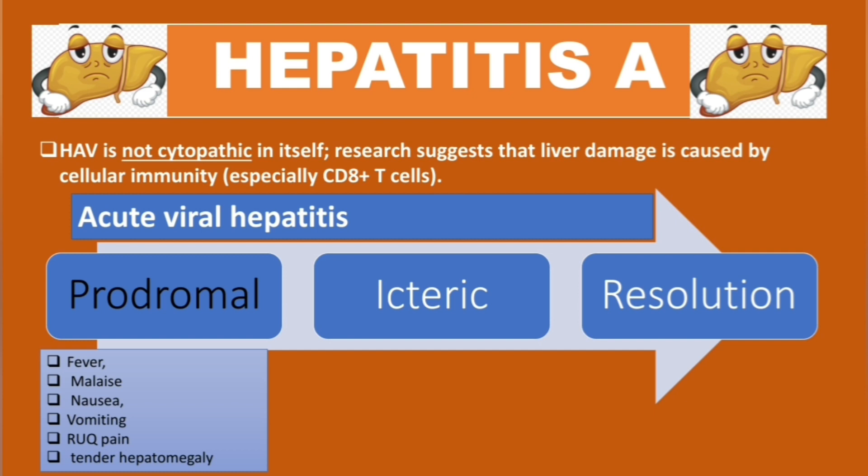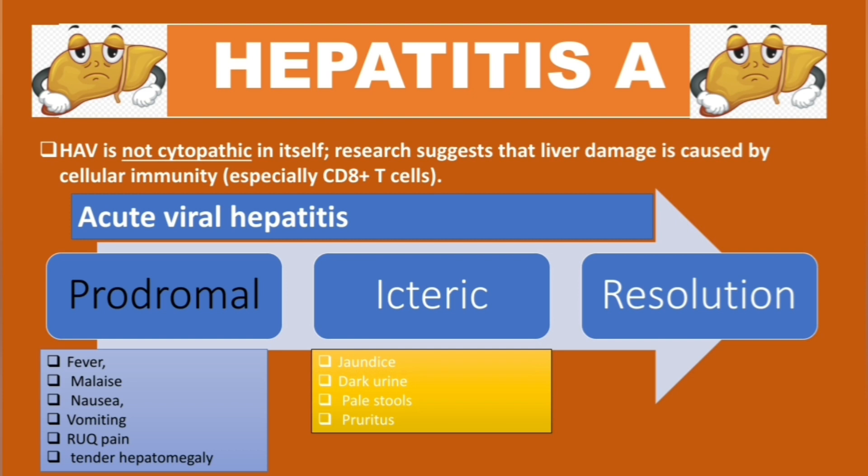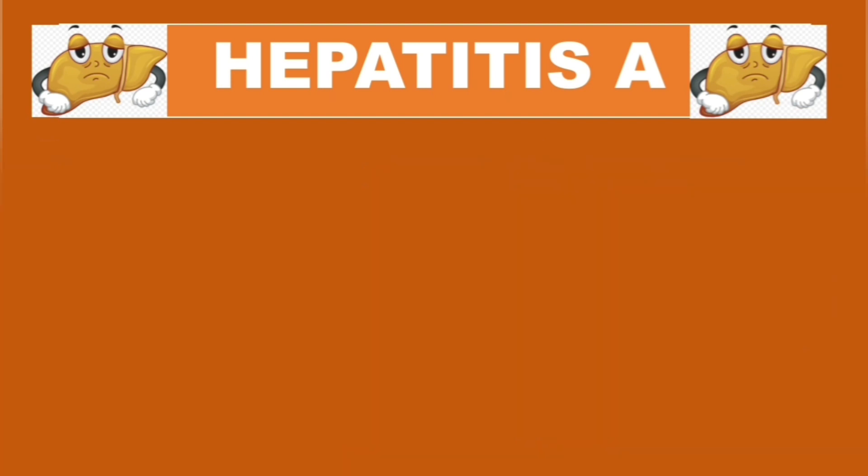The icteric phase is characterized by jaundice, dark urine, pale stool, and pruritus. Resolution is simply the resolution of symptoms. For diagnosis, a liver function test is performed, but that test is non-specific, so the focus here is on confirmatory tests.